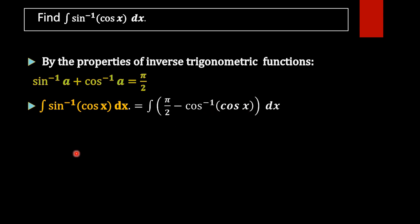what is cos inverse of cos x? This cos and this cos can cancel. Then what we will get is integral of pi by 2 minus x dx.